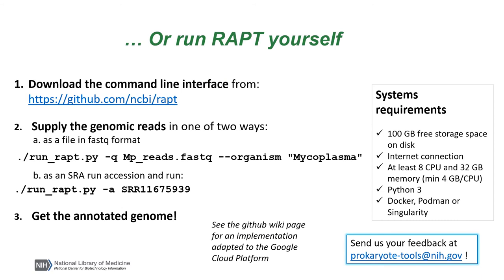As an alternative, you can run RAPT yourself on your own machine. You download the command line interface from our GitHub site and then just provide the genomic reads to that Python application — either the FASTQ file and the organism name associated with it, or just provide the SRA accession and run. A couple of hours later, you will get the annotated genome.